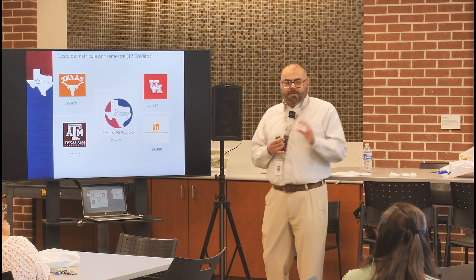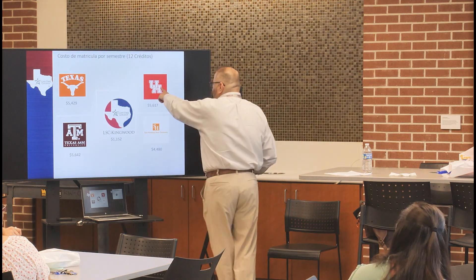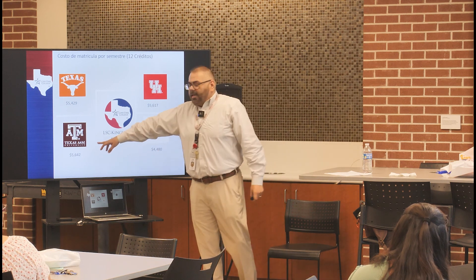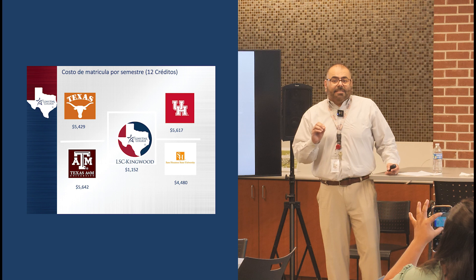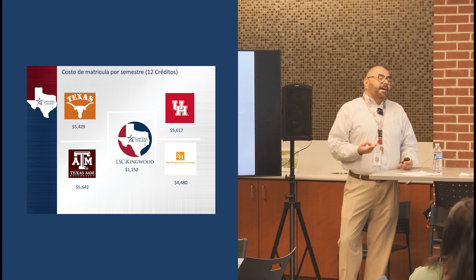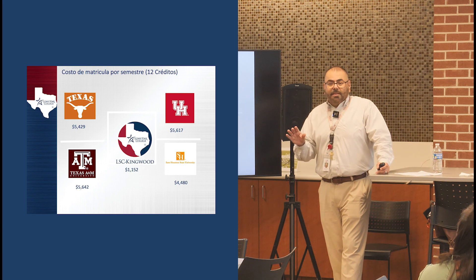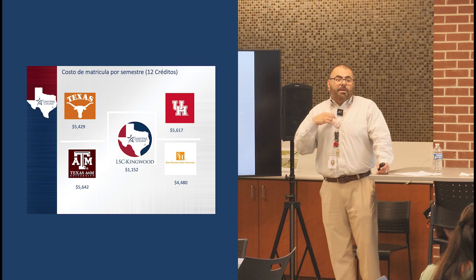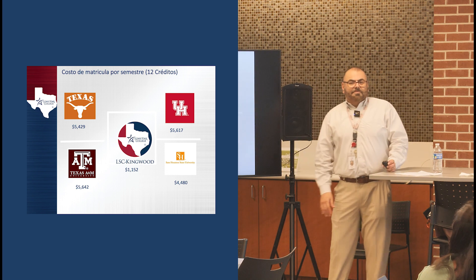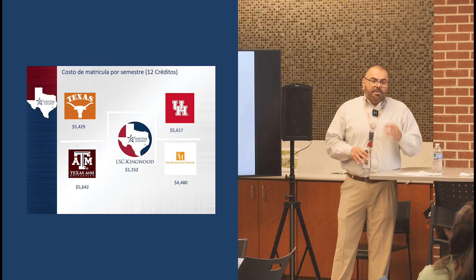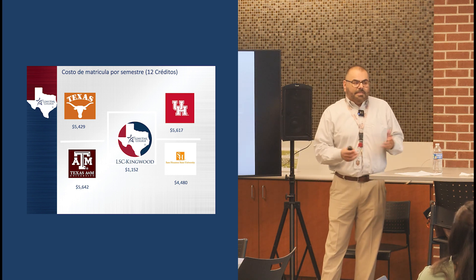El costo de matrícula por semestre. Vamos a ver las universidades más comunes de aquí en Texas. Está la UT en Austin, University of Houston, Sam Houston State en Huntsville, y A&M en College Station. Quiero que miren — por un semestre solamente la matrícula, que significa las clases. Esto no incluye dormitorios, plan de comida, ni libros. Es simplemente las clases que vas a tomar por un semestre, que en una universidad son cuatro clases, que son 12 horas. Y este comparado con aquí en Kingwood — es impactante la diferencia. Y también quiero decirles que muchos profesores, el currículo, todo lo que enseñamos es exactamente igual que están enseñando en esas universidades. Es igual.